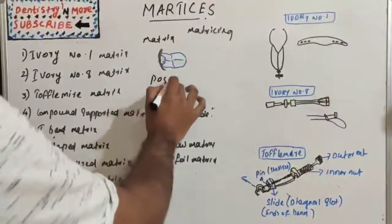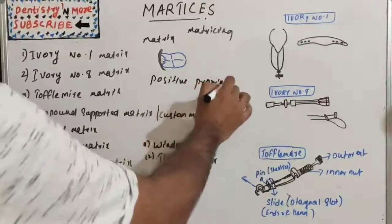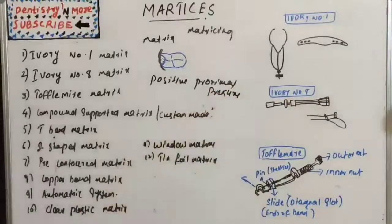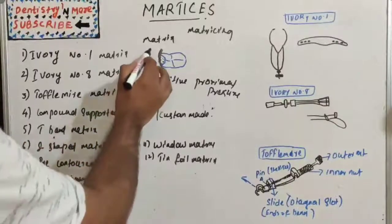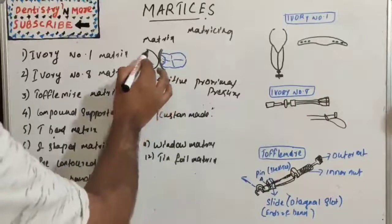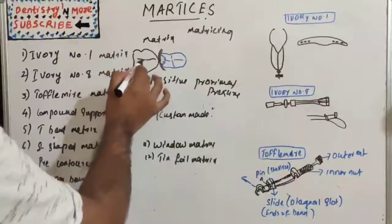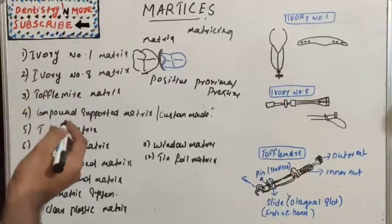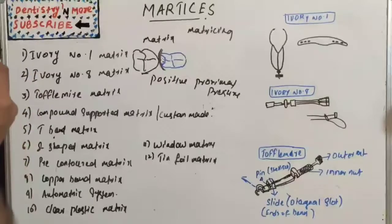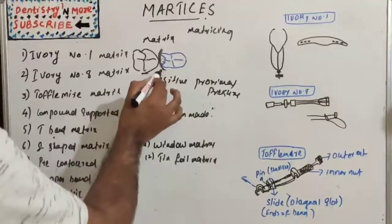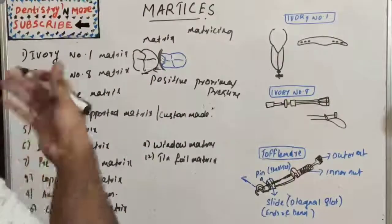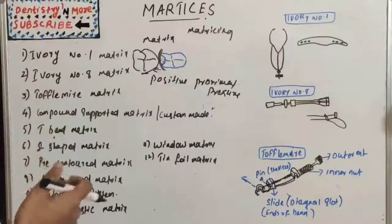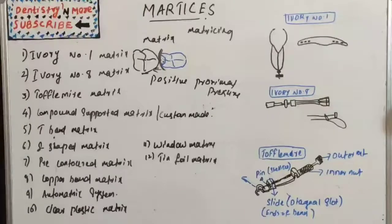There should be positive proximal pressure, meaning the matrix should exert a positive pressure against the adjacent tooth during the insertion of the restoration, so that after its removal, normal contact between the teeth is established. That is positive proximal pressure.